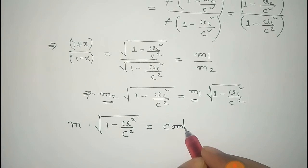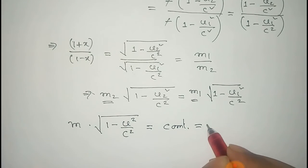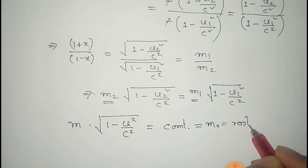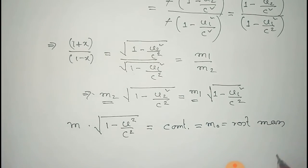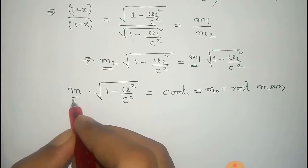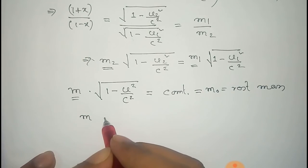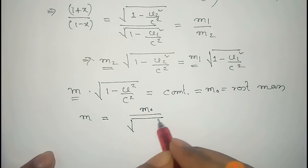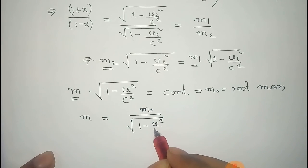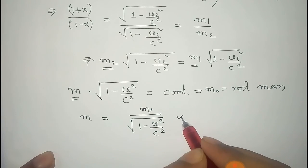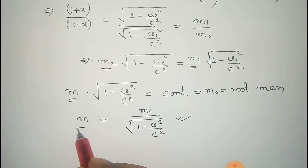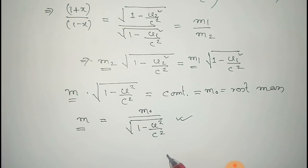We take this constant as m₀, the rest mass of the particle. From this, we get the relativistic mass expression: m equals m₀ divided by the square root of (1 minus u²/c²). This is the relativistic expression for mass, showing its velocity dependence.